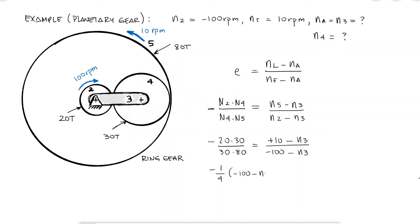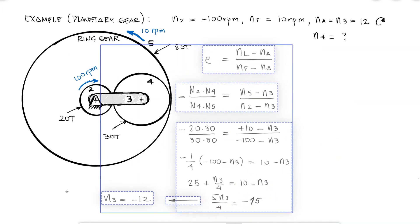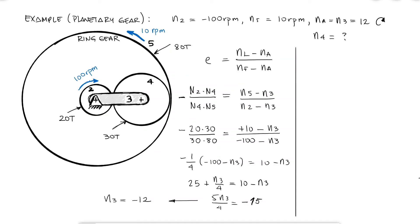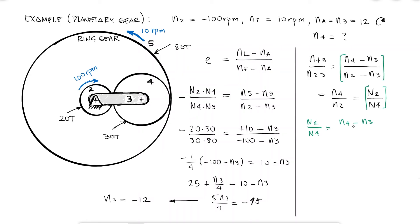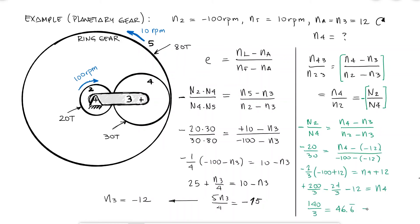Substituting the given values and solving for n3 (the speed of the arm) gives an arm speed of 12 rpm in the clockwise direction. Knowing the speed of the arm, I can find the relative speed of gear 4 with respect to the arm, and also the speed of gear 2 with respect to that same arm. The ratio between speeds of 4 and 2 with respect to the arm is just the ratio between their speeds — due to that basic relationship between number of teeth and speed, it's a value I know. Solving for n4, and knowing that the direction of rotation of gears 2 and 4 are opposite, we find that the speed of gear 4 is 46.6 rpm in the counterclockwise direction.